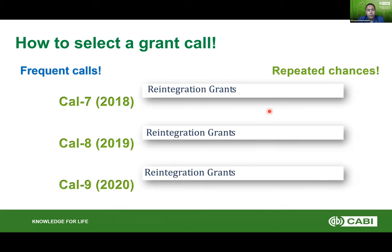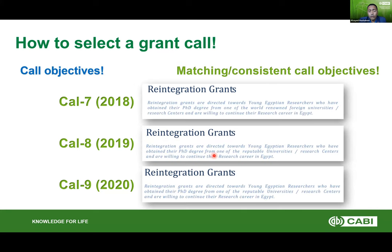Another good idea when selecting a call is to look for frequently offered calls — those offered every single year. If you don't win in the first round, you can readjust and reapply. If you missed the deadline, you can come back and apply the next year. Also consider calls with matching and consistent objectives. For example, the reintegration call is not only frequent and consistent, but the objectives target the same exact group year after year.